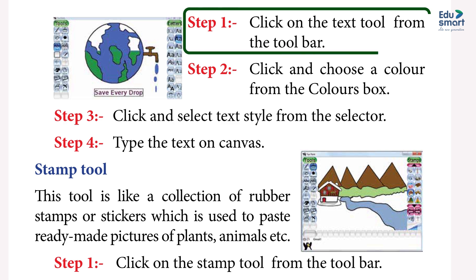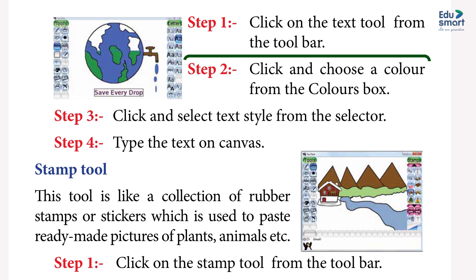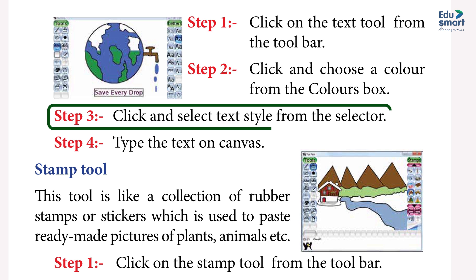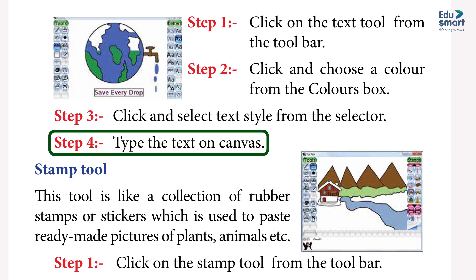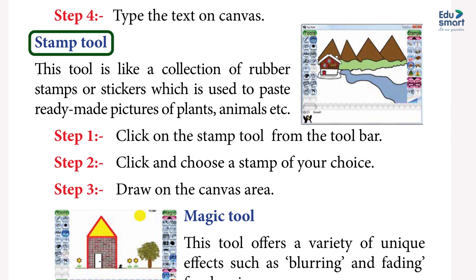Steps for the Text tool: Step 1: click on the Text tool from the toolbar. Step 2: click and choose a color from the colors box. Step 3: click and select text style from the selector. Step 4: type the text on the canvas.